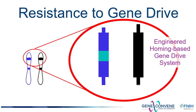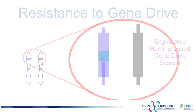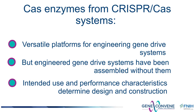This problem of resistance is a general problem, also seen with insecticides, but it's an important technical challenge that must be considered for engineered gene drive systems constructed using Cas enzymes from the CRISPR-Cas system. Cas enzymes provide many opportunities to create a great variety of gene drive systems and is a popular platform used by researchers and developers. Researchers are focused on finding ways to minimize the potential of resistance development, and are also looking for ways to construct gene drive systems without using Cas enzymes.